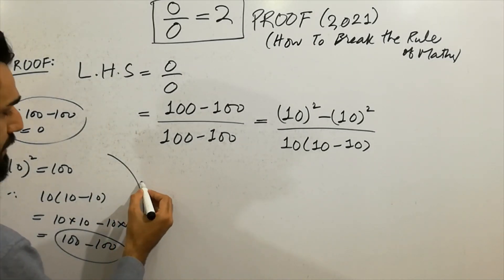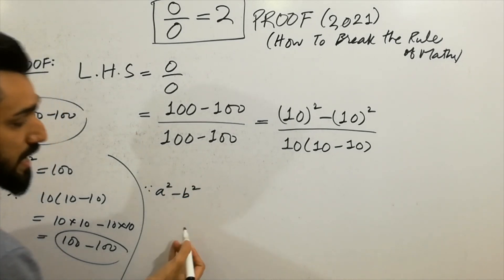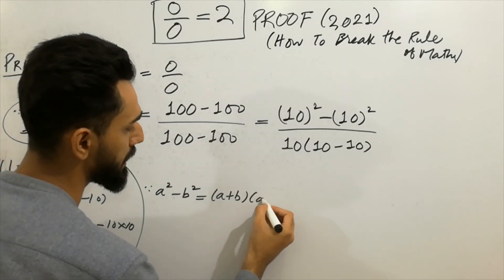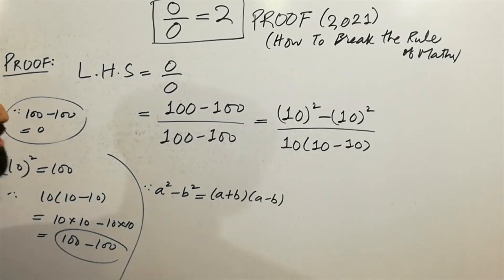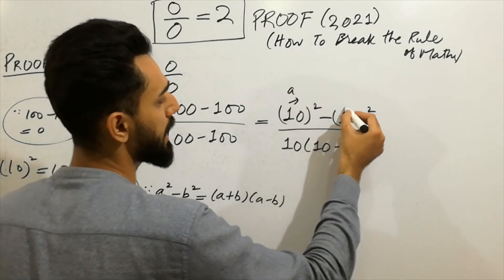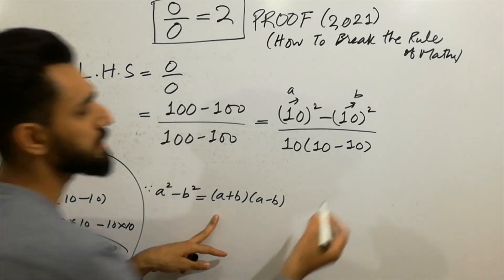Next step is very simple. Since a squared minus b squared always equals a plus b and a minus b, so just follow the step. This is a and this is b. You can write here this is a and this is b. A squared minus b squared will be equal to a plus b, a minus b.